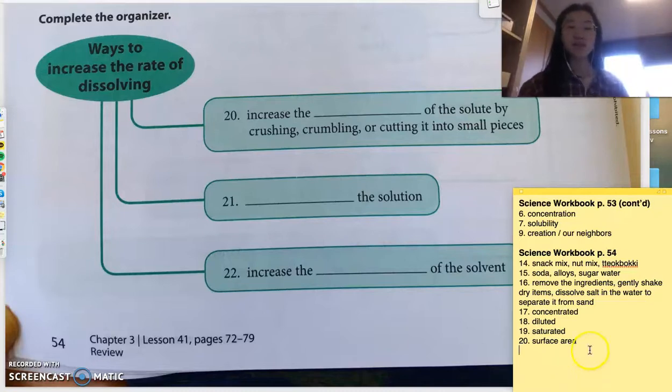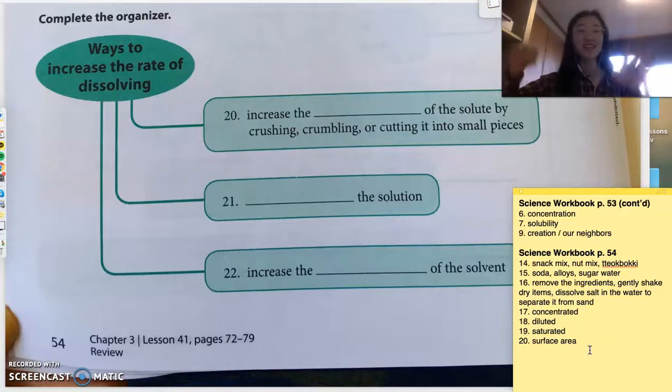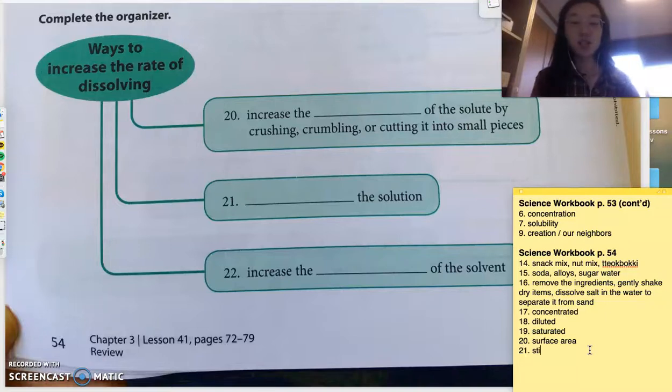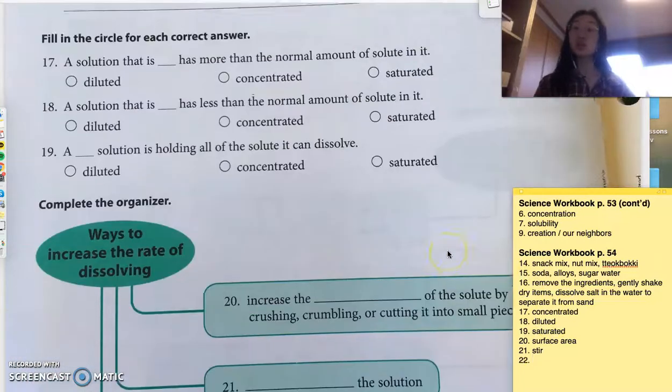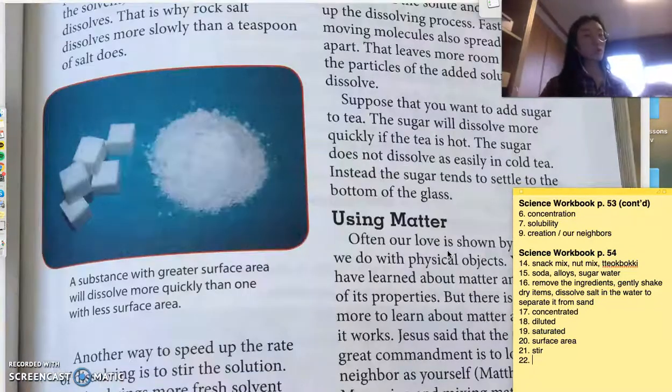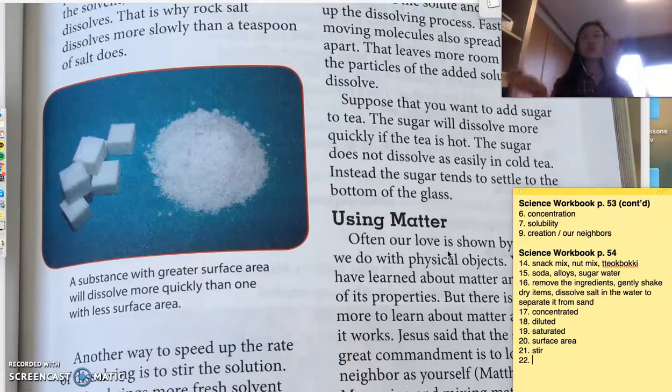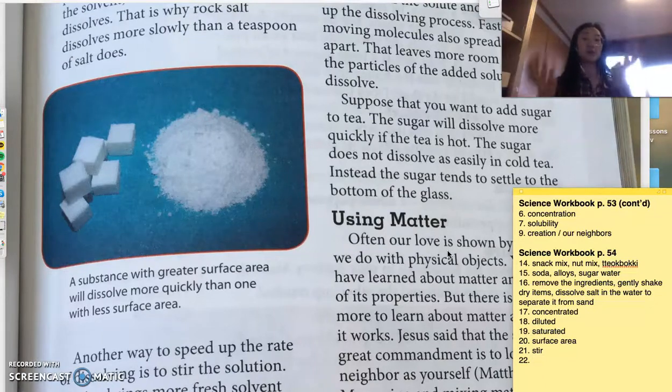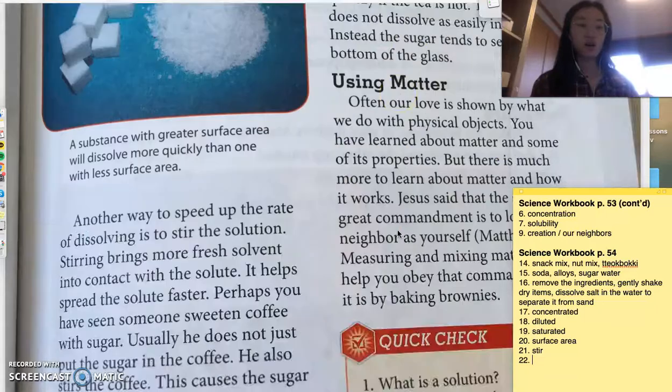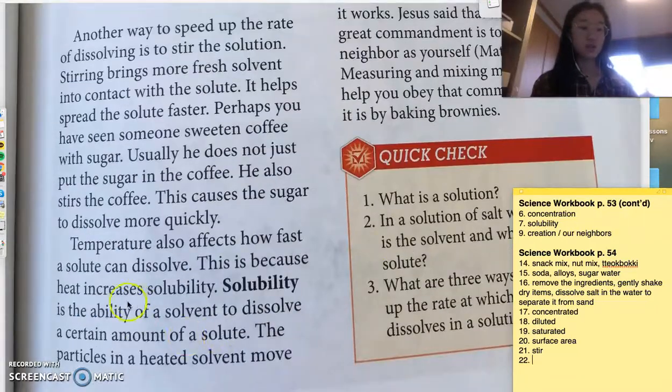21, blank the solution. So, when I was a Starbucks barista, I always had to stir it to make sure that the syrup or the sugars were spread out evenly. So, 21, stir it up. And 22, increase the blank of the solvent. So, this is when we talked about the cold water and the hot water. If you put sugar in cold and hot water, which one will dissolve faster? Hot. So, increase the heat. Heat increases solubility. Woohoo! We did it! We are done for science today.